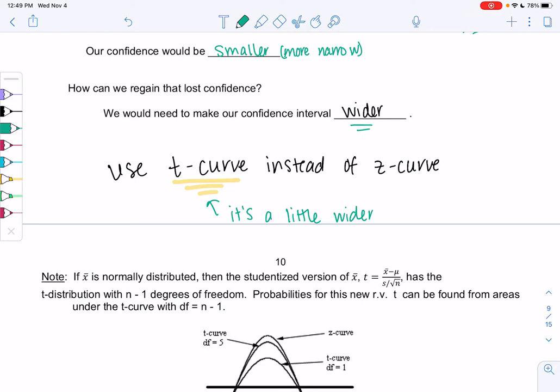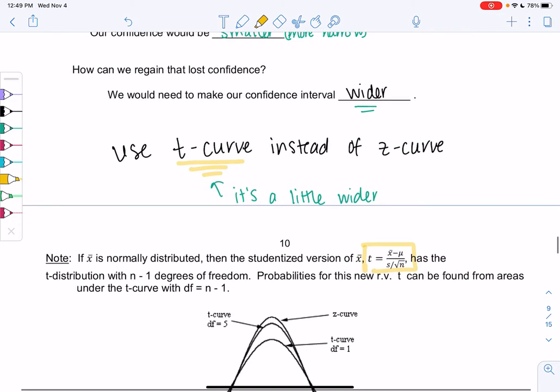If x-bar is normally distributed, then we can use this new thing called the studentized version of x-bar, and it's called the t-curve. Notice the formula looks the same as a z-score. It's the x-bar minus μ over the standard deviation. The new thing with the t-distribution is it has degrees of freedom of n minus 1, sample size minus 1.